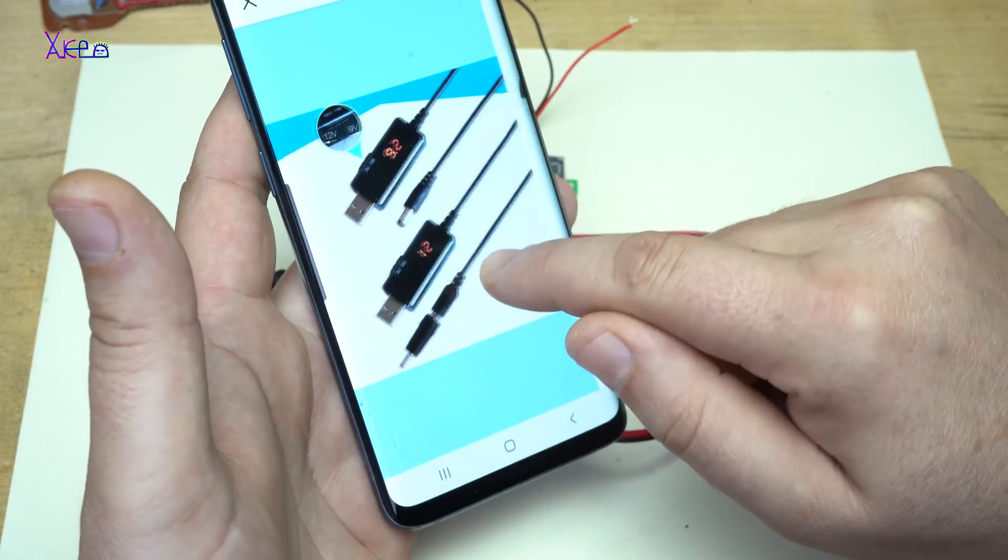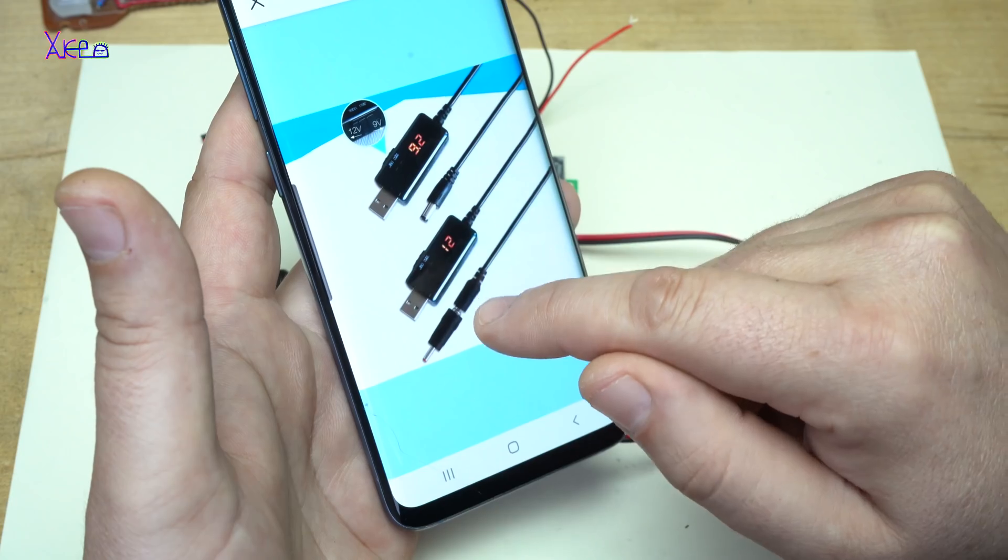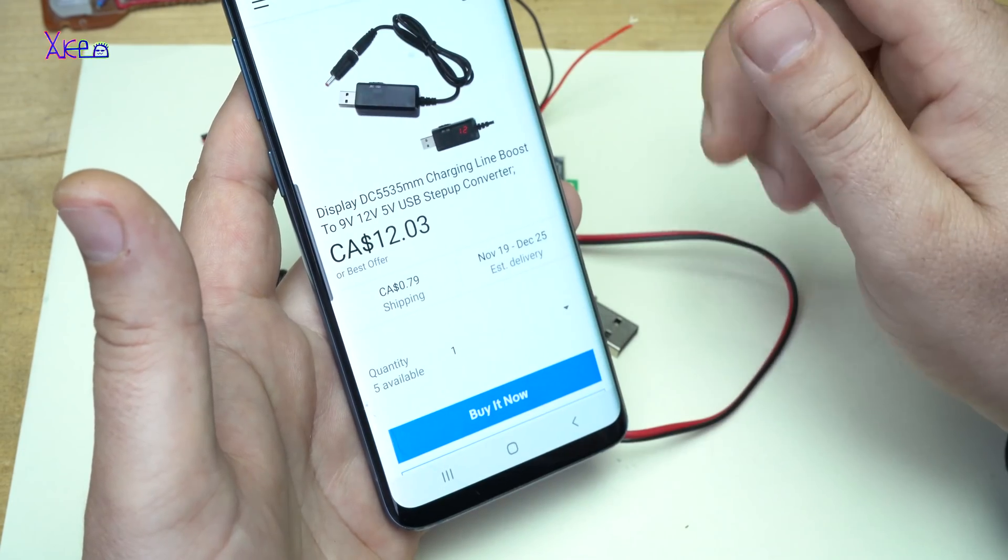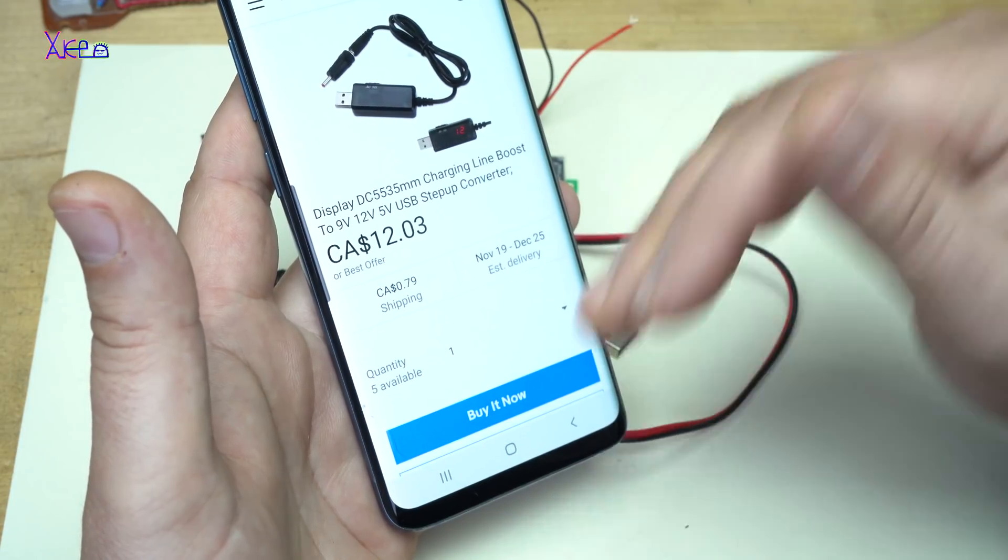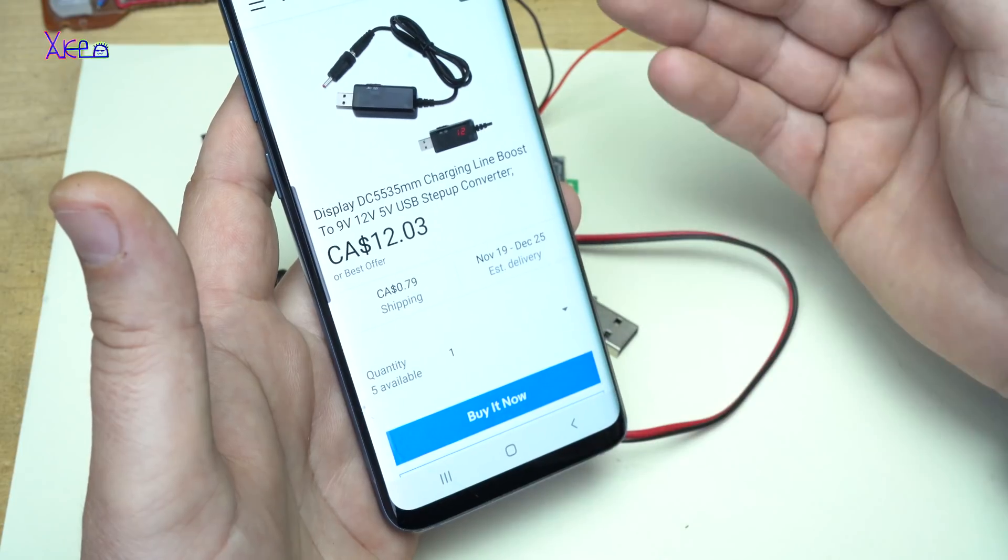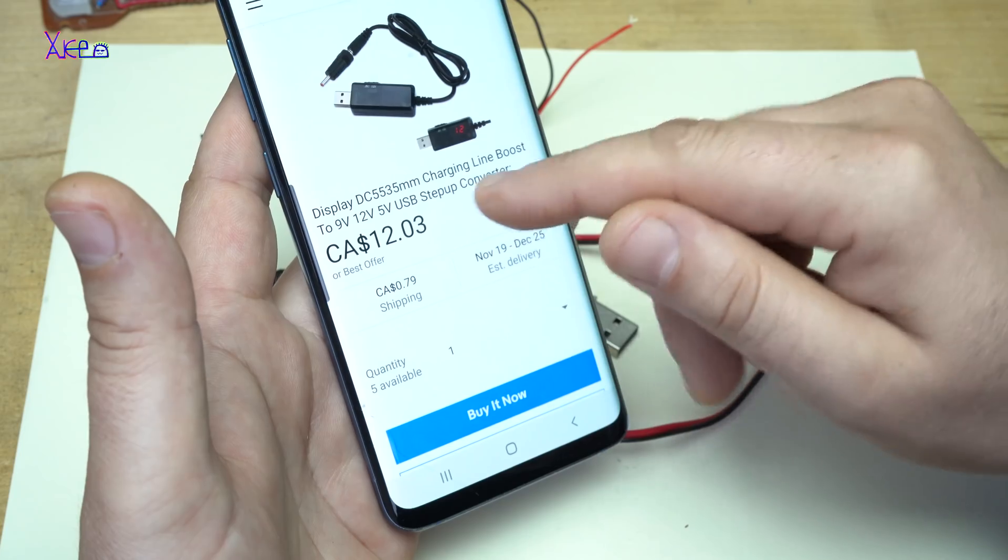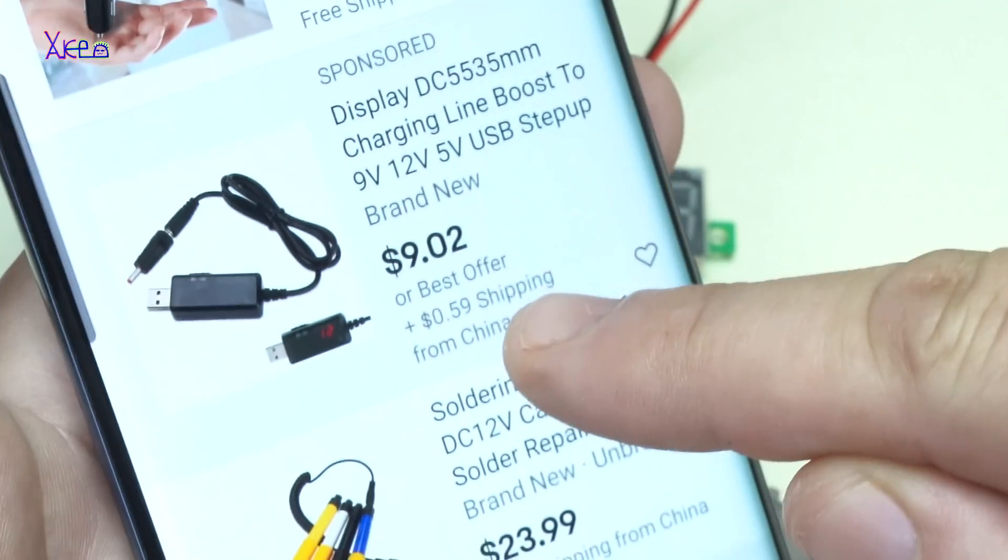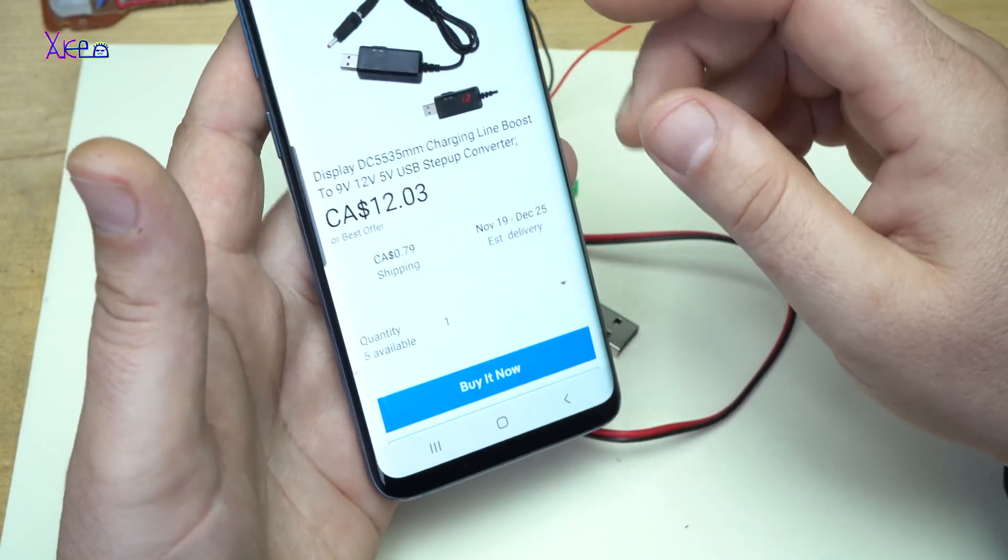And on the end of the cable there's a DC jack. It's a nice device when you want to convert from 5 volts to 12 volts, 9 volts, 15 volts maybe. And it costs around nine dollars. Nine dollars for this stuff, I can't believe it.